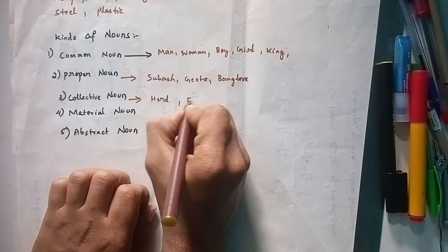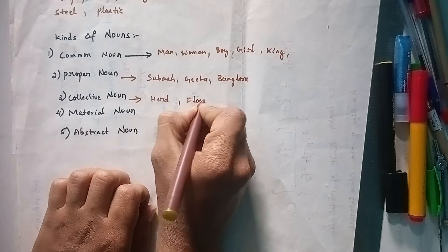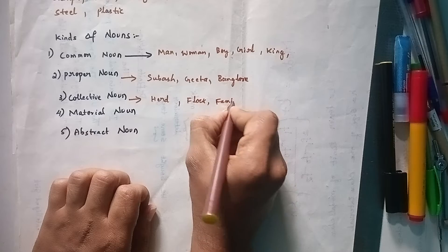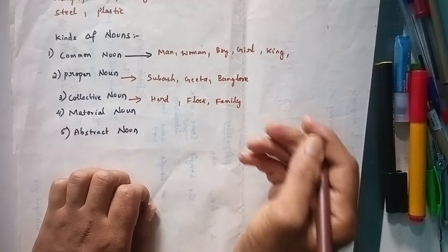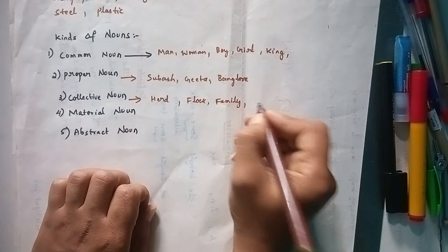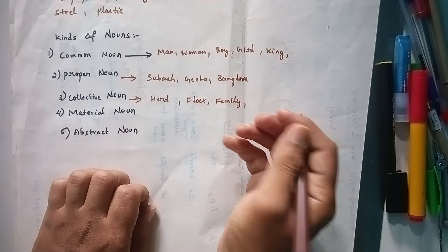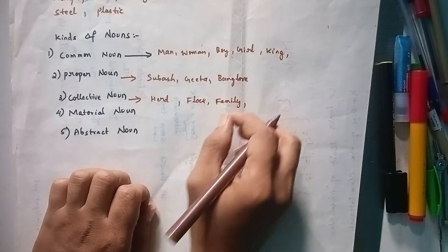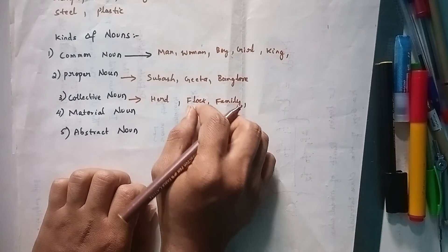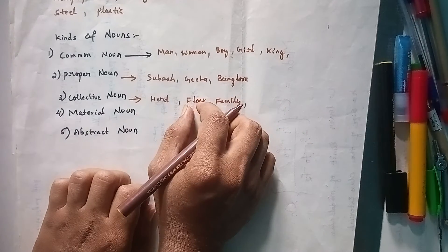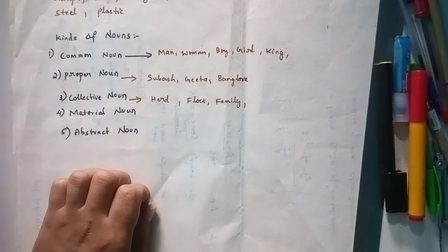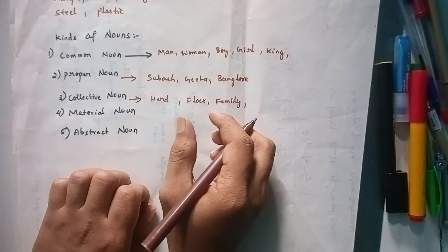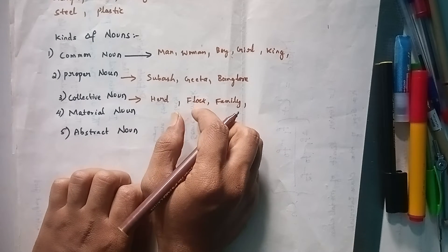Other examples of collective nouns: flock — a group of birds is called a flock. Family — parents and their children together are called a family.